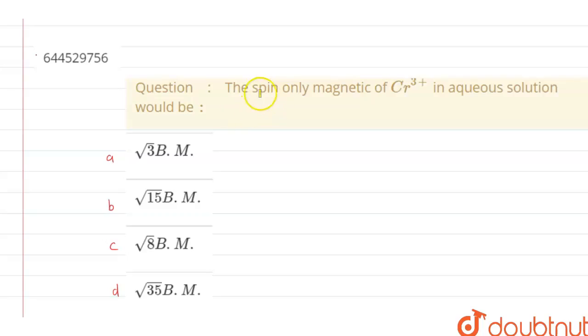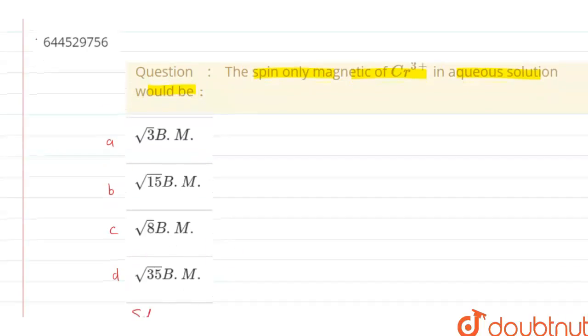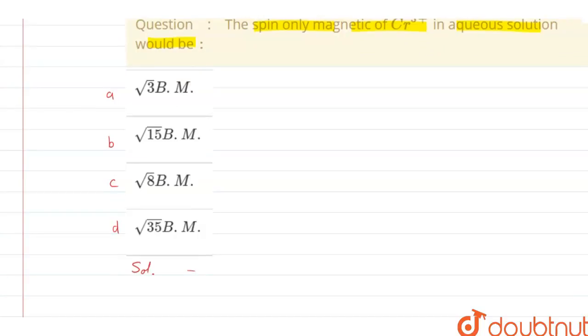The question given here is, the spin-only magnetic moment of Cr³⁺ in aqueous solution would be. So there are four options given here. So we have to choose the correct option out of them.